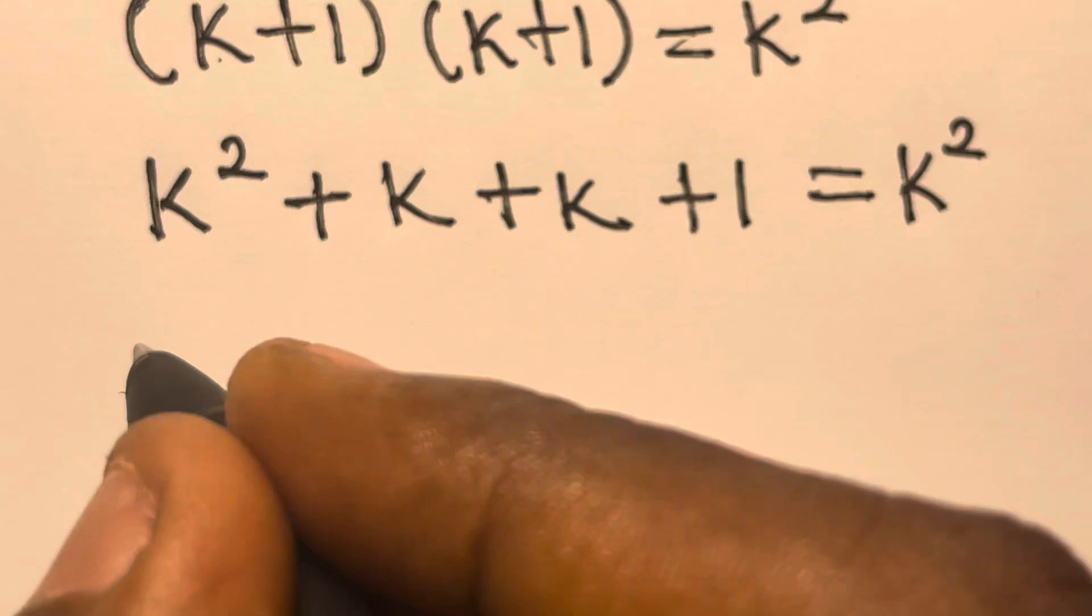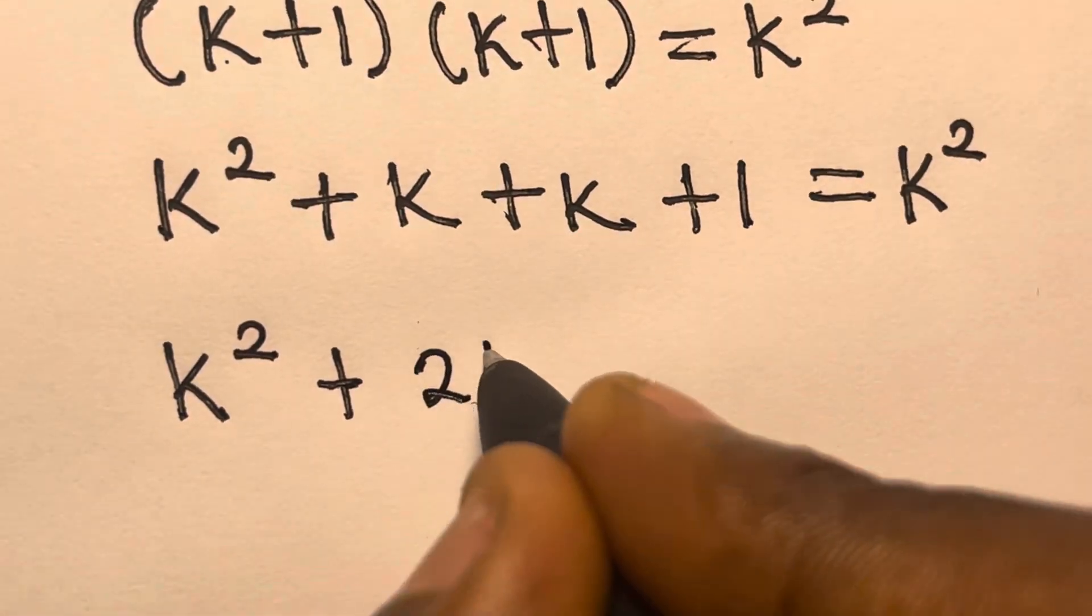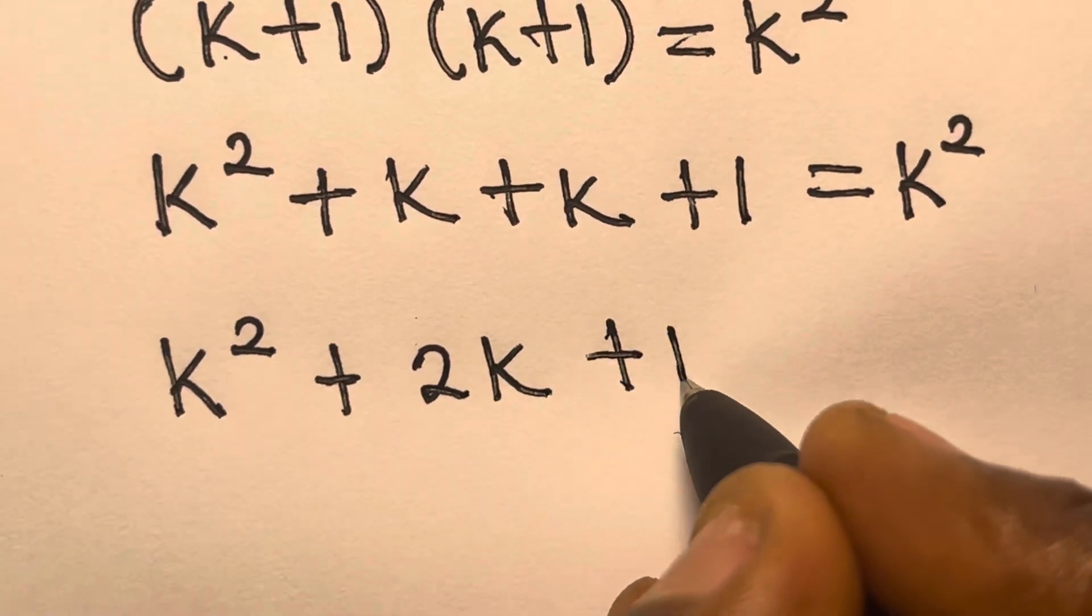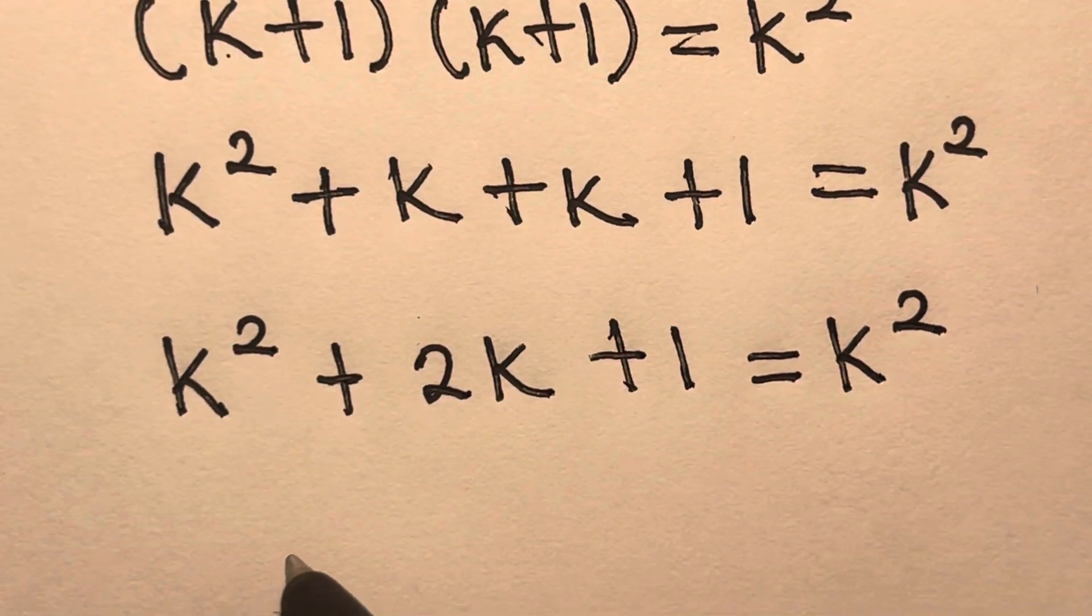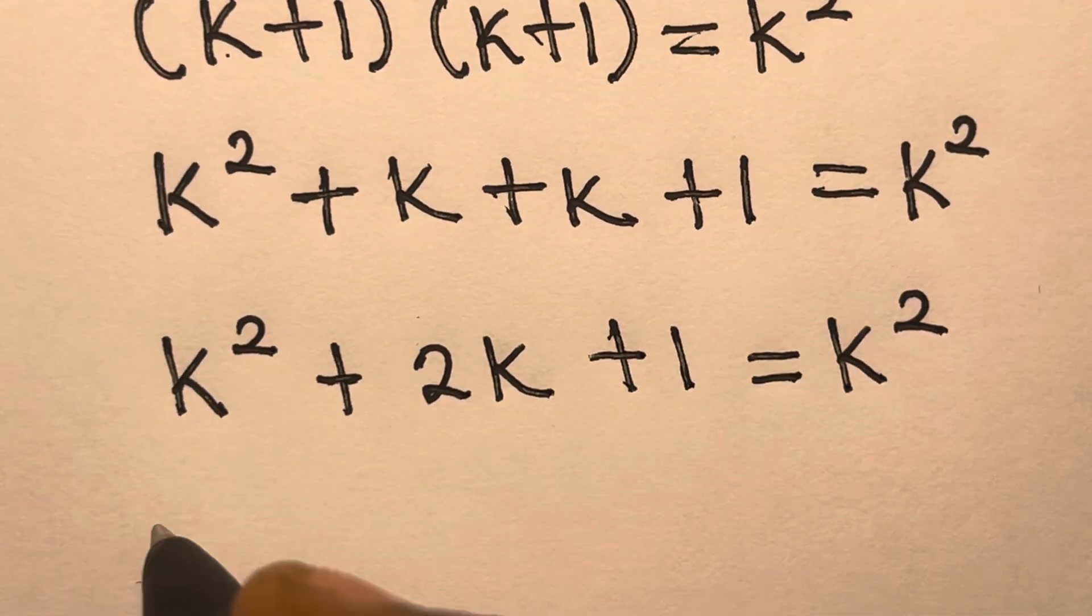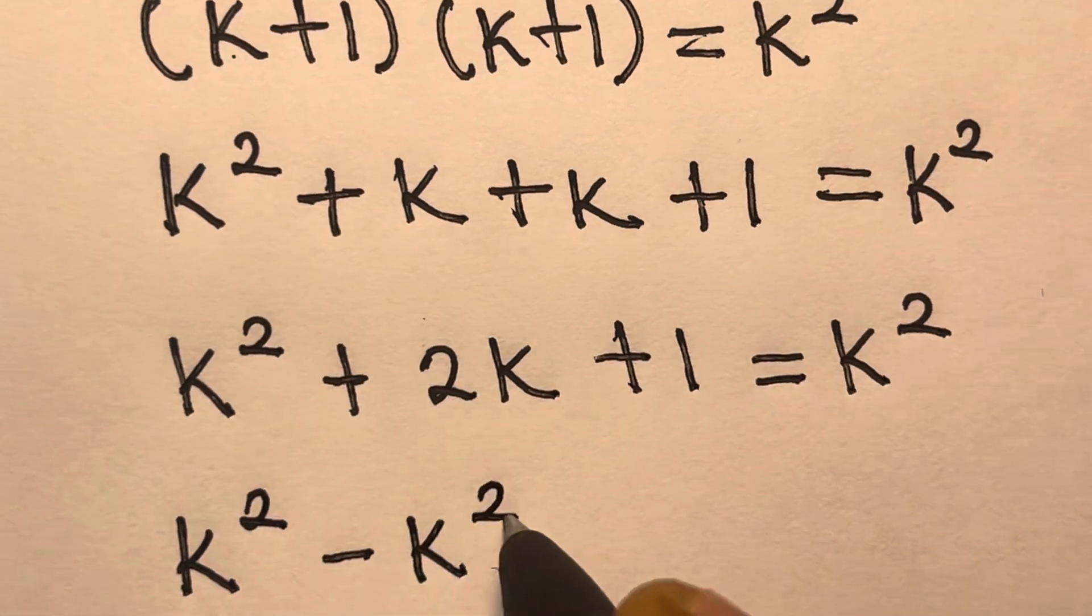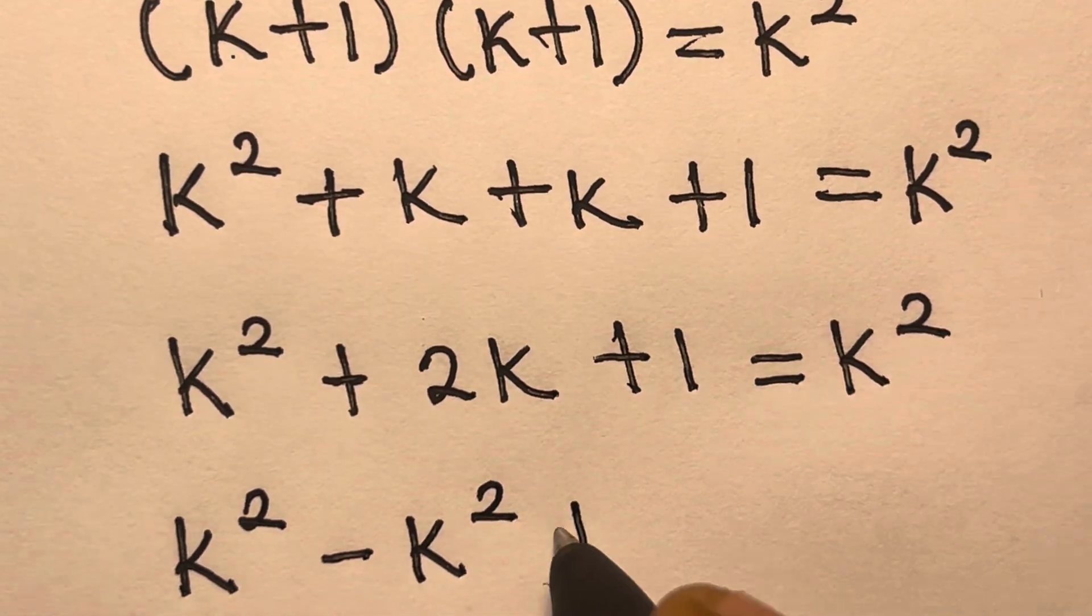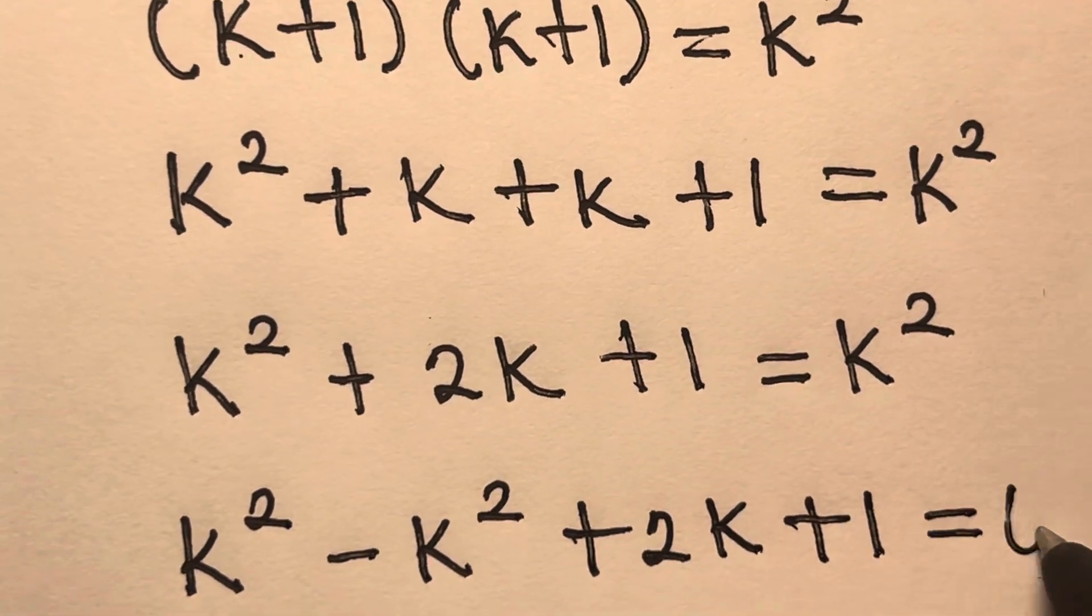So now we have k square plus k plus k, we have 2k, plus 1 equals k square. So from here, we can transfer this square to this side. So we have k square minus k square. Right? Plus 2k plus 1 equals 0.